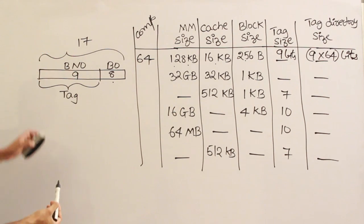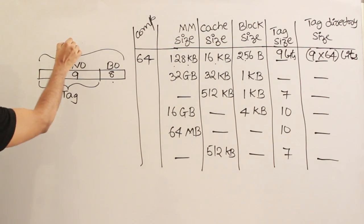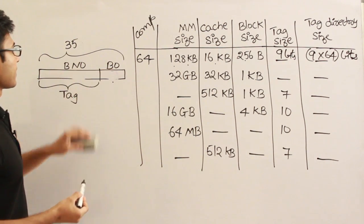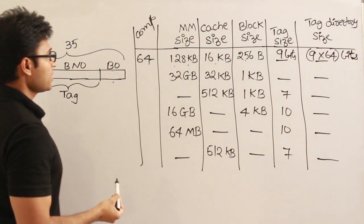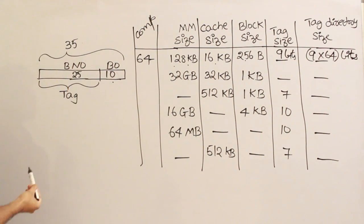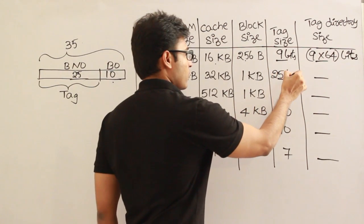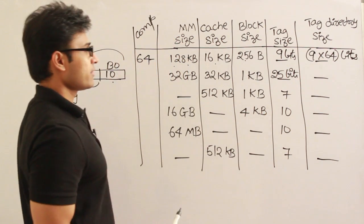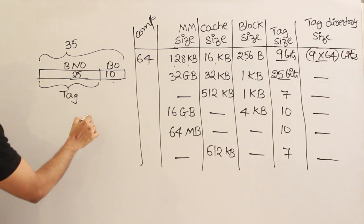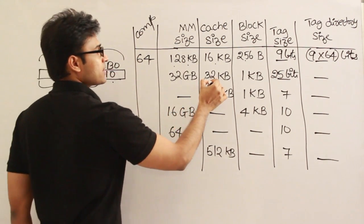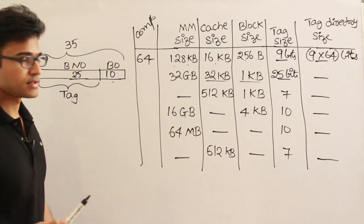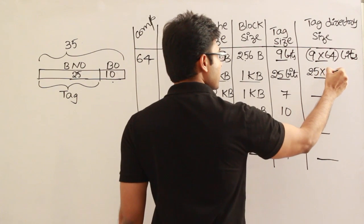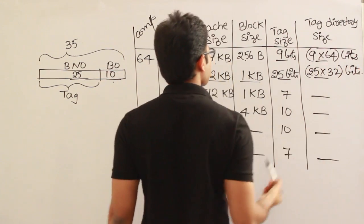Next example: main memory is 32GB = 2^35, so the physical address is 35 bits. Block size is 1KB = 2^10, so the block offset is 10 bits. The tag size is 35 − 10 = 25 bits. Cache size is 32KB and block size is 1KB, giving 32 lines. Therefore the tag directory size is 25 × 32 bits.